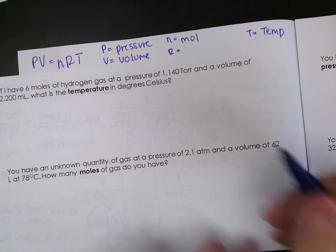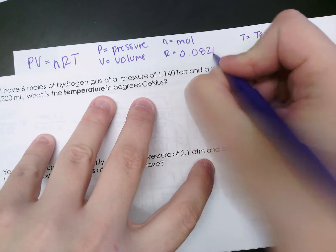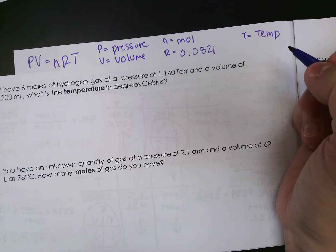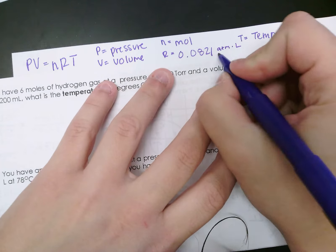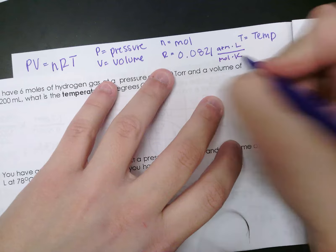r is our gas law constant. And for us, we are going to use 0.0821. That number is always going to be r for us. And then our units on that are atmosphere times liter divided by moles times kelvin.